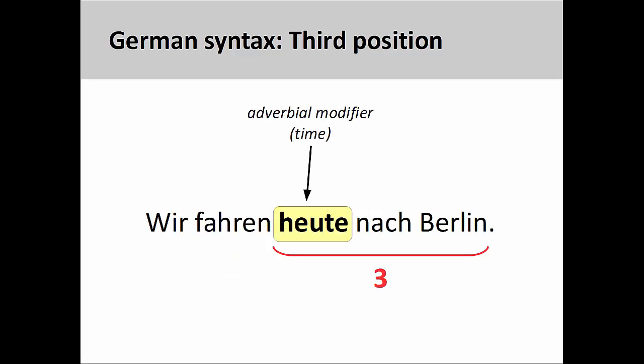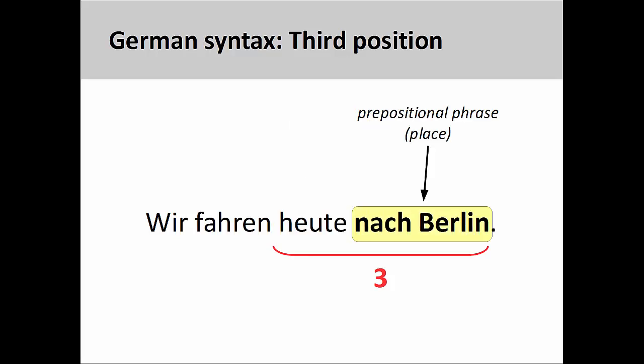In the third position, we can see heute, today, acting as an adverbial time modifier, as well as the dative prepositional phrase, nach Berlin, to Berlin, describing the place to where the subject is driving.